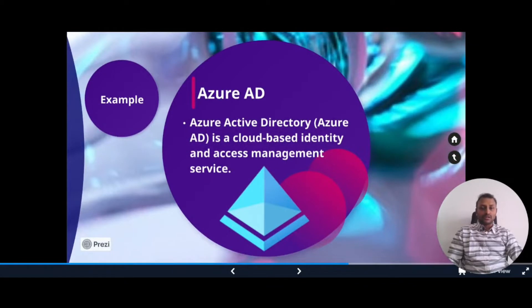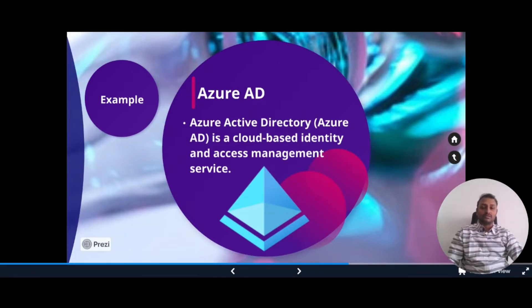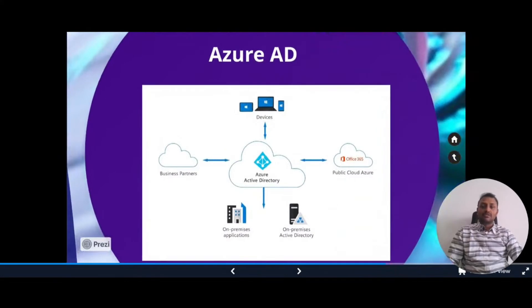Next one is Azure Active Directory, which is a cloud-based identity and access management service that helps you control access to your applications and resources. It enables your employees to access external resources such as Microsoft 365, the Azure portal, and thousands of other SaaS applications. Azure AD can be used to manage users, groups, and devices, as well as provide single sign-on to your applications. For example, if you have on-premise applications and three participants — business partners, devices, and public cloud Azure Office 365 — anyone who wants to access these has to go through Azure Active Directory.